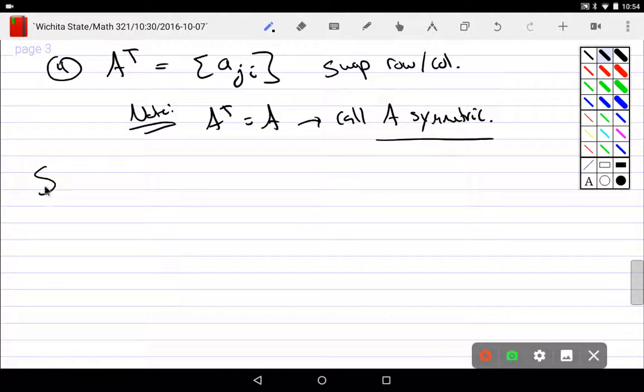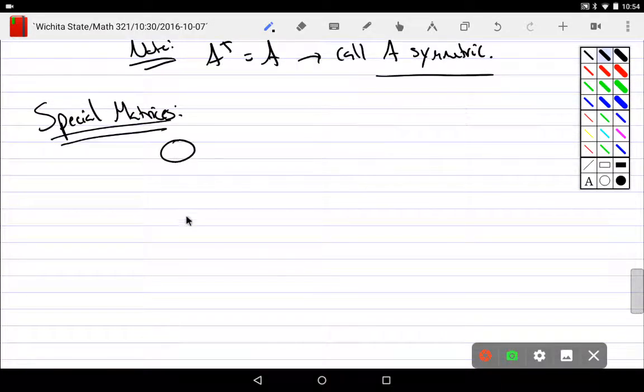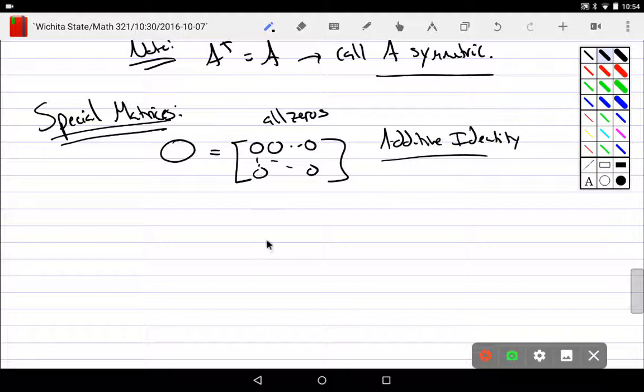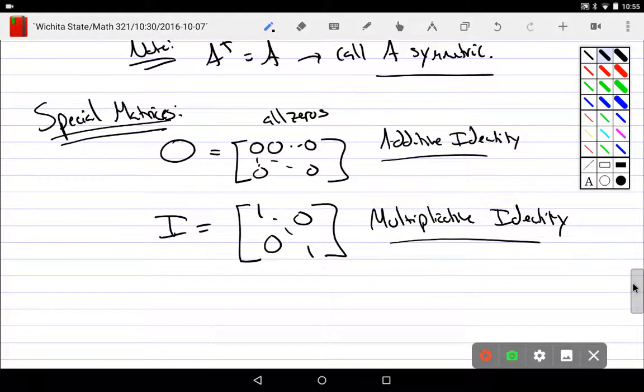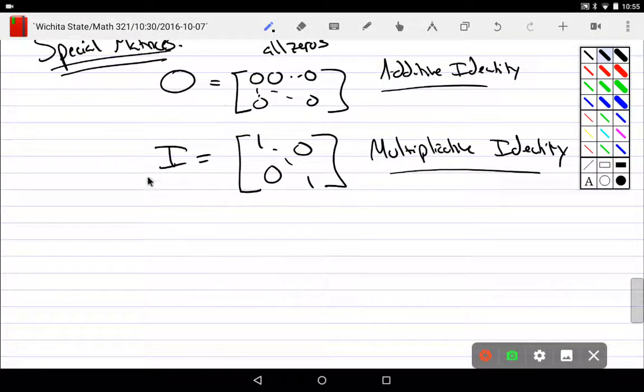If we have some special matrices, big O matrix is the matrix of nothing but zeros. That would be the additive what? It's the additive identity. Because if you add zeros to every element, are any of the elements going to change? Nope. And the second one is I, which is ones down the diagonal and zeros everywhere else. This is the multiplicative identity.